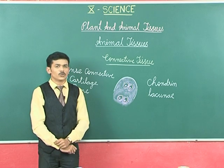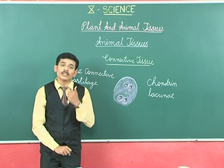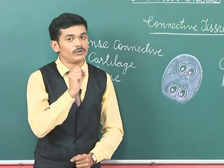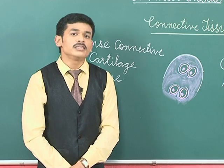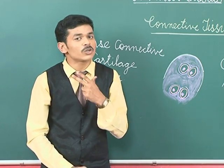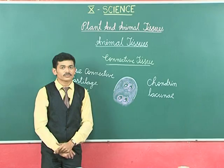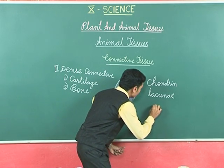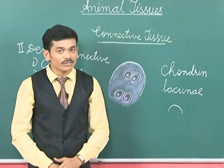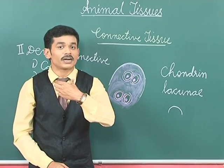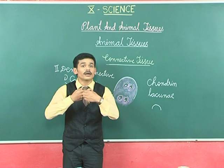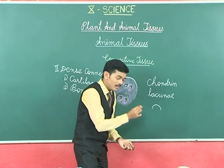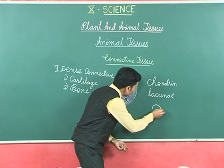The chondrin is secreted by the chondrocytes, which is one of their functions. Regarding location, cartilage is present in the trachea as a C-shaped structure. The trachea and bronchus have C-shaped cartilage and the other part is filled by muscle.